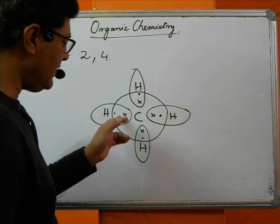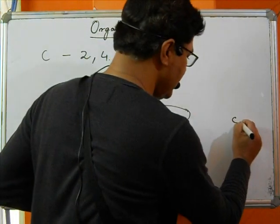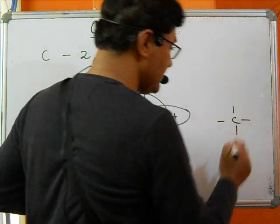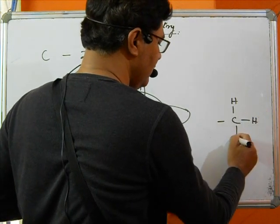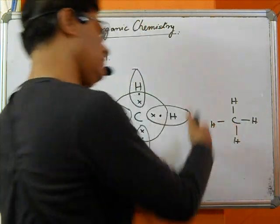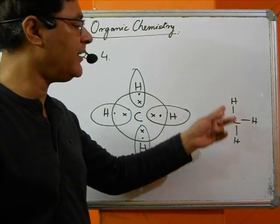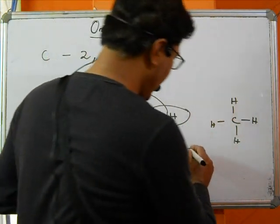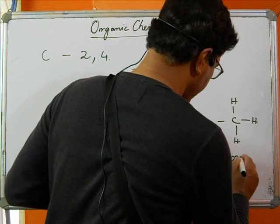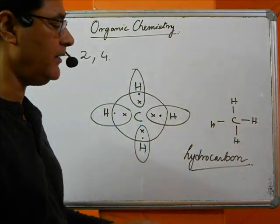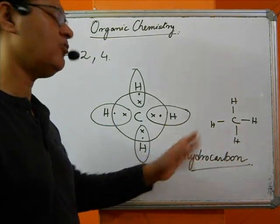We can consider these four electrons of carbon as four arms. Carbon has four arms and it catches four hydrogens — one here, one here, one here, one here. So this is what forms CH4, a compound of carbon and hydrogen which is a hydrocarbon. The name, as you all know, is methane.